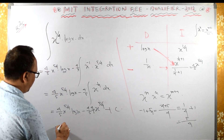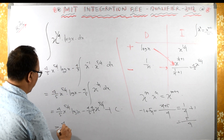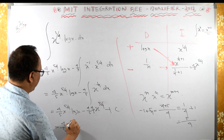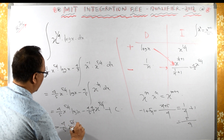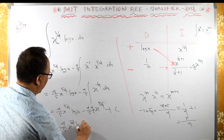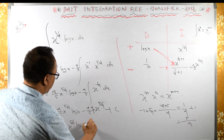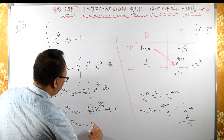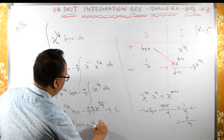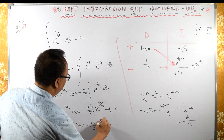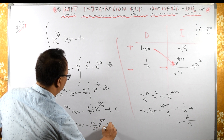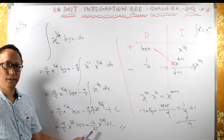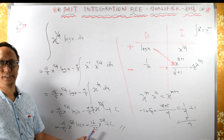The result is 4/5 x raised to 5/4 into log x minus 16/25 x raised to 5/4 plus C. This is the required answer.